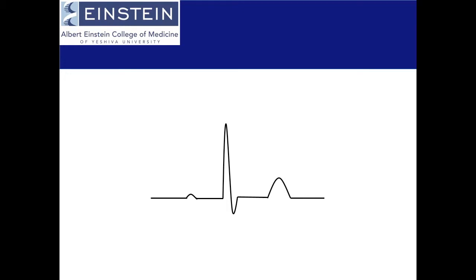Here's an example of a normal lead of an electrocardiogram, or an ECG. This is the P wave, demonstrating atrial contraction. This is the QRS complex, demonstrating ventricular contraction. And this is the T wave, demonstrating ventricular repolarization.